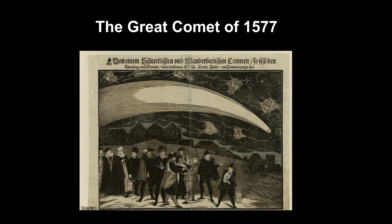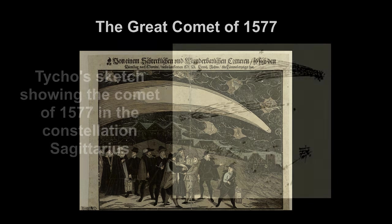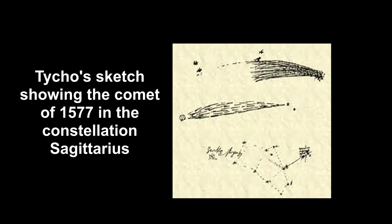Here's the Great Comet of 1577, as seen over Prague. Tycho Brahe studied this very bright comet that shone in the night sky for 74 days. He found that he could not see any parallax.